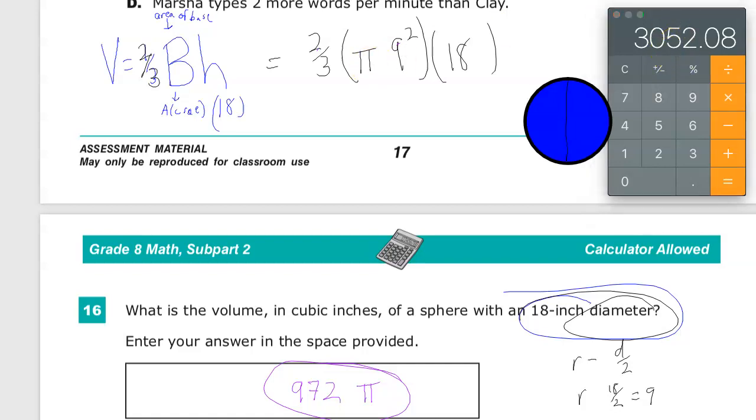So this answer, 3052.1 roundabout, is okay as well. They don't tell you. They'll actually take anything in this range up to 3,055. So you don't have to be precise. If they don't say put it in a certain form, you don't have to put it in a certain form. It gives you a little bit of breathing room.